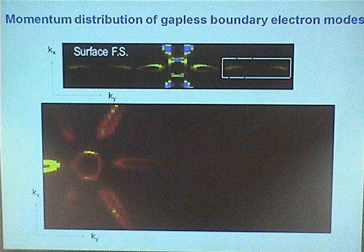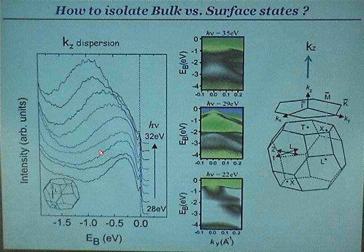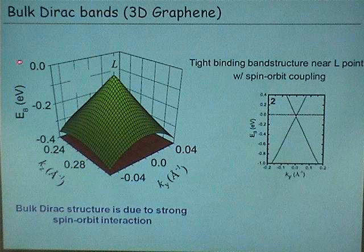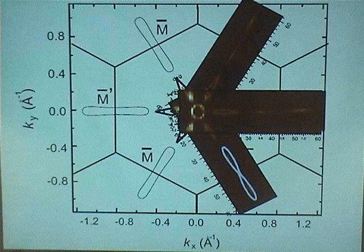What is the evidence that the bulk bands don't intercept the Fermi energy? This is how close it gets — it's a gap, it's below the Fermi energy zero. It's also known from optics: one can do optical conductivity and see it's a gap. That was done by Russians in the 60s, 70s, or 80s. But that does not mean there is no impurity or other things that could contribute.